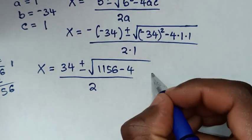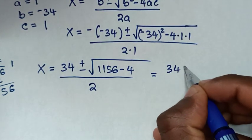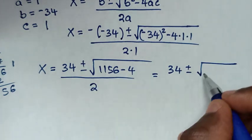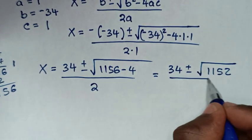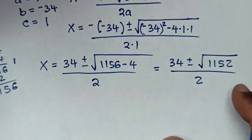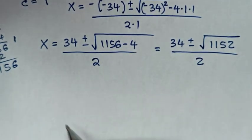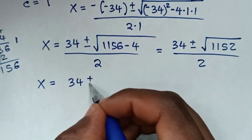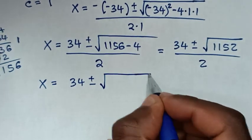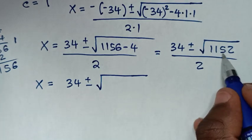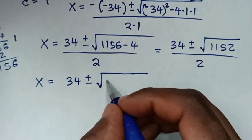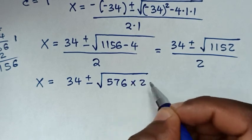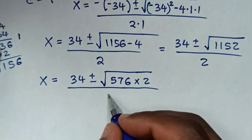Then it will be equal to 34 plus or minus square root of 1152, over 2. And 1152 is the same as 576 times 2, over 2.